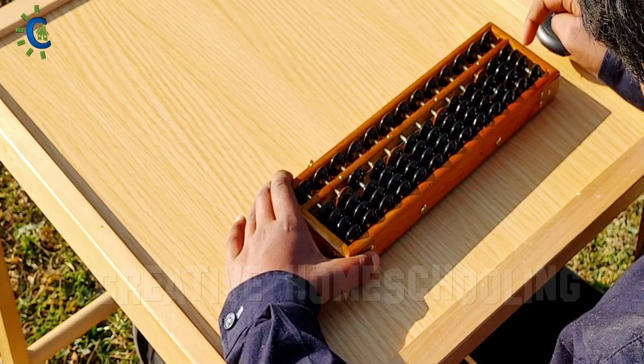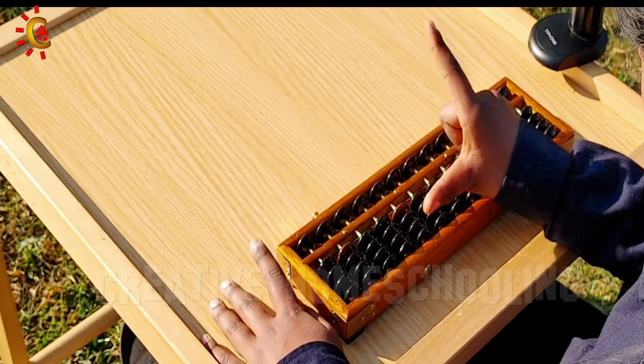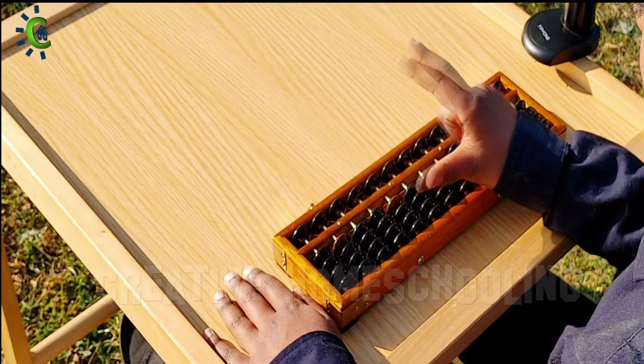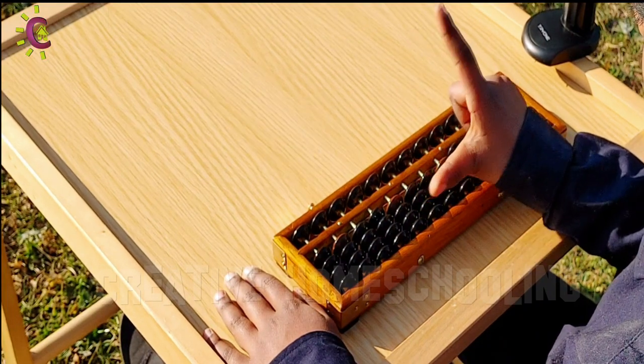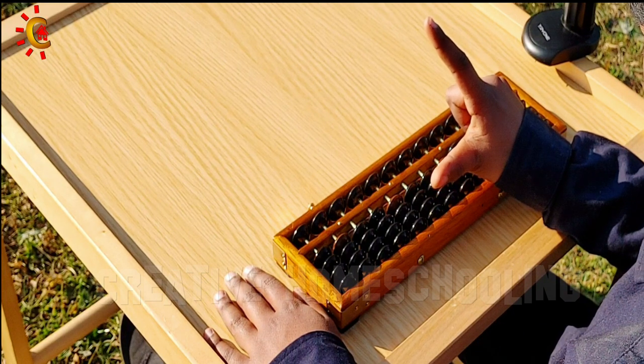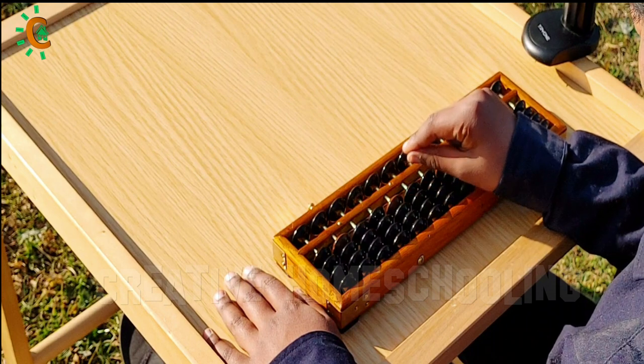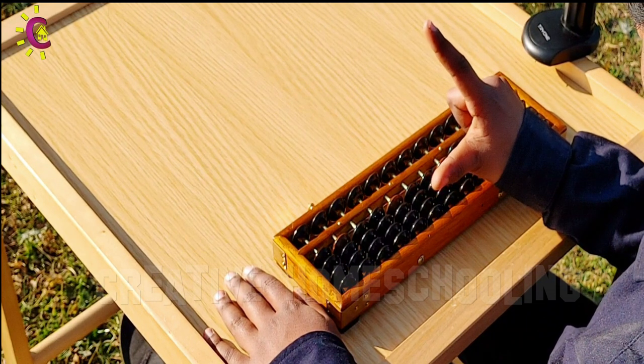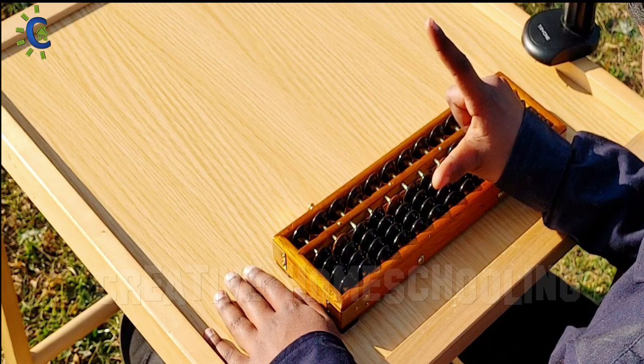When calculating on abacus, use two fingers, the right index finger and right thumb. Some operators use only the index finger, but experiments show that it is more efficient to use the thumb as well. Nearly all experts use two fingers.